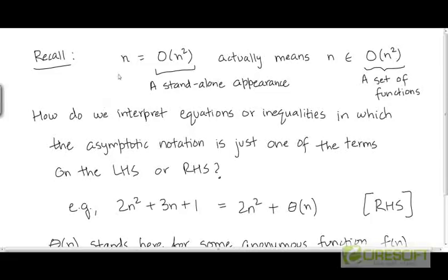We have seen that when we write a formula like n equals O(n²), what we actually mean is that n belongs to the set denoted by this notation. So O(n²) is really a set of functions where each function grows either at the same rate as n-squared or at a rate smaller than n-squared. This is how we interpret formulas where the big-O notation or some other asymptotic notation makes a standalone appearance on the right-hand side.